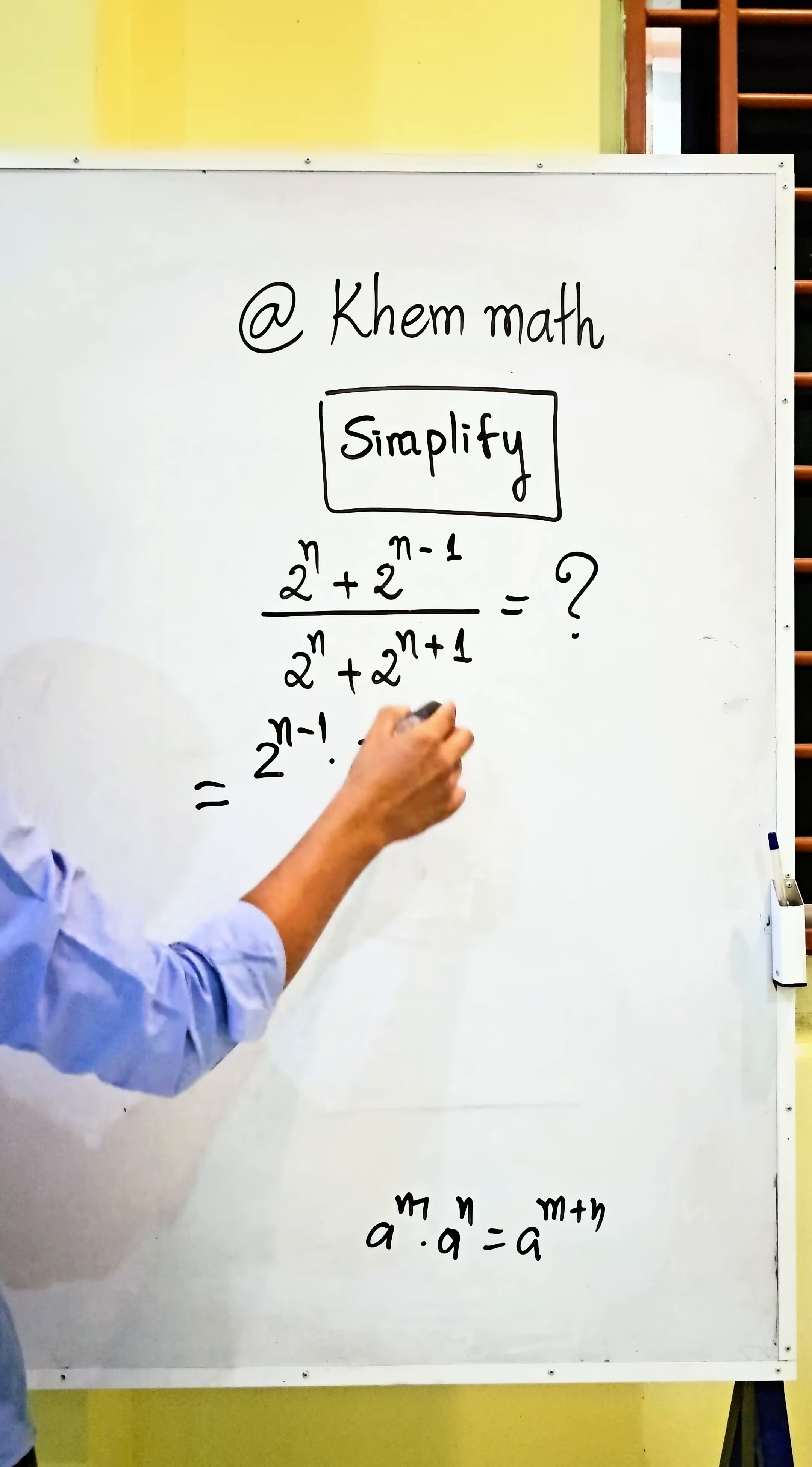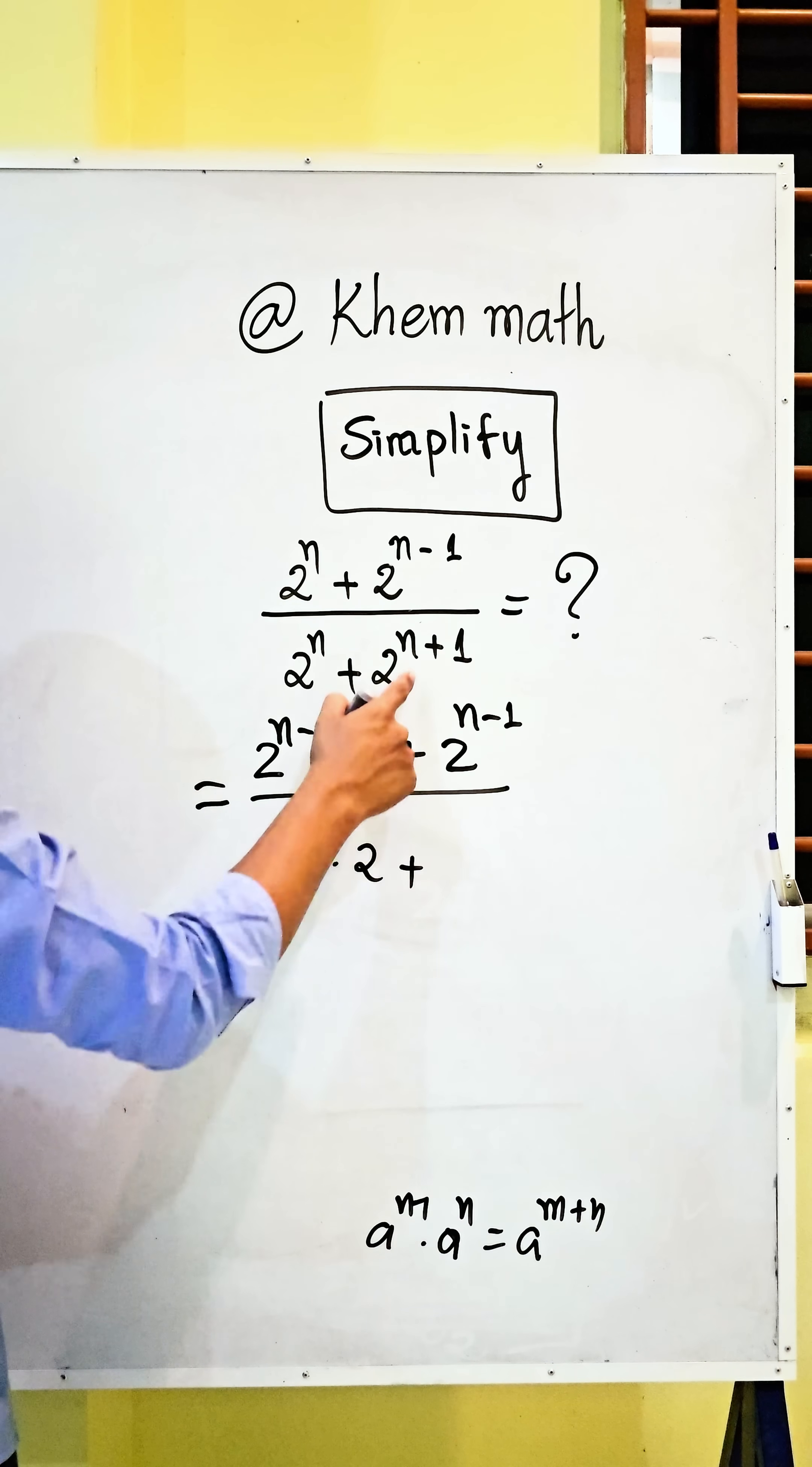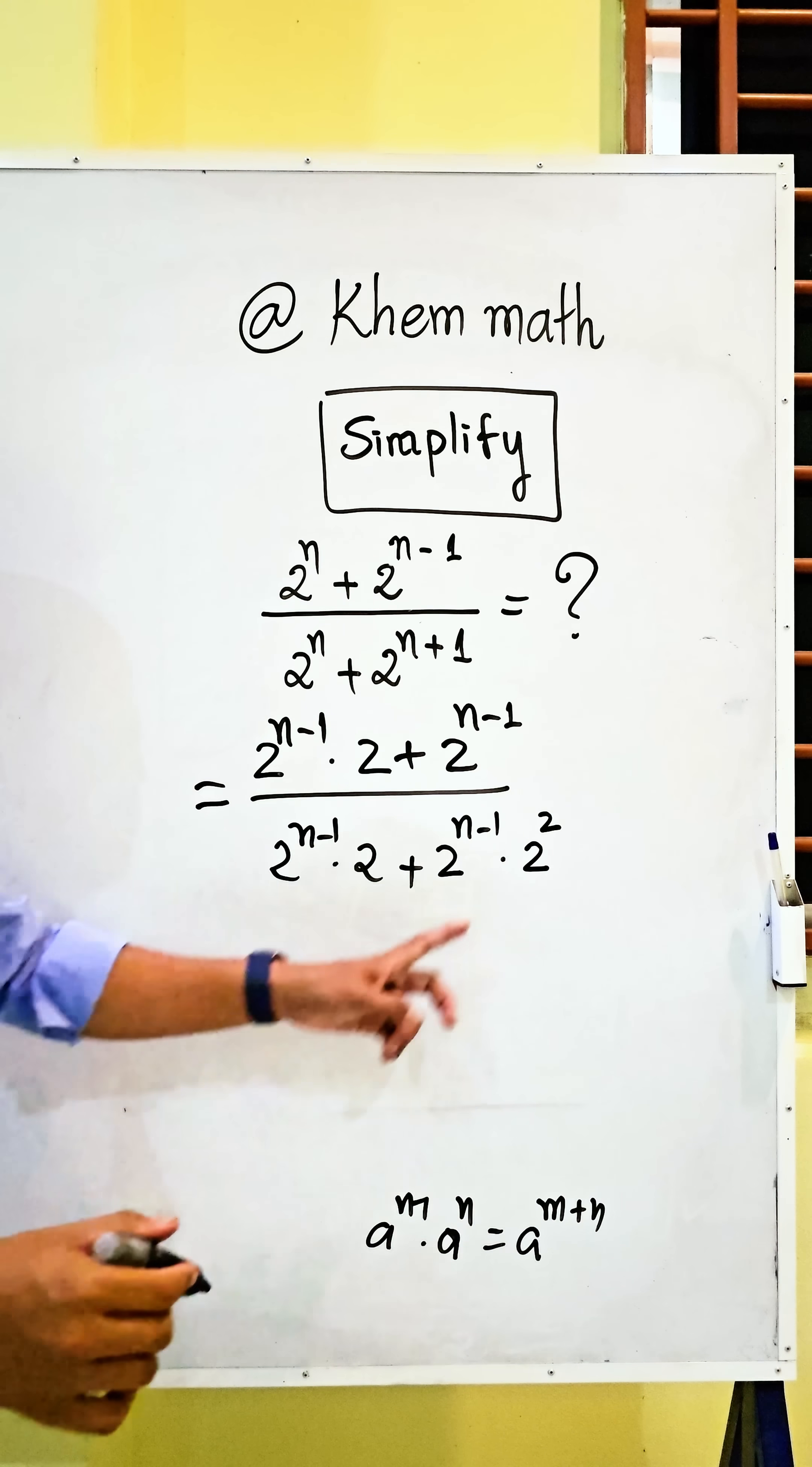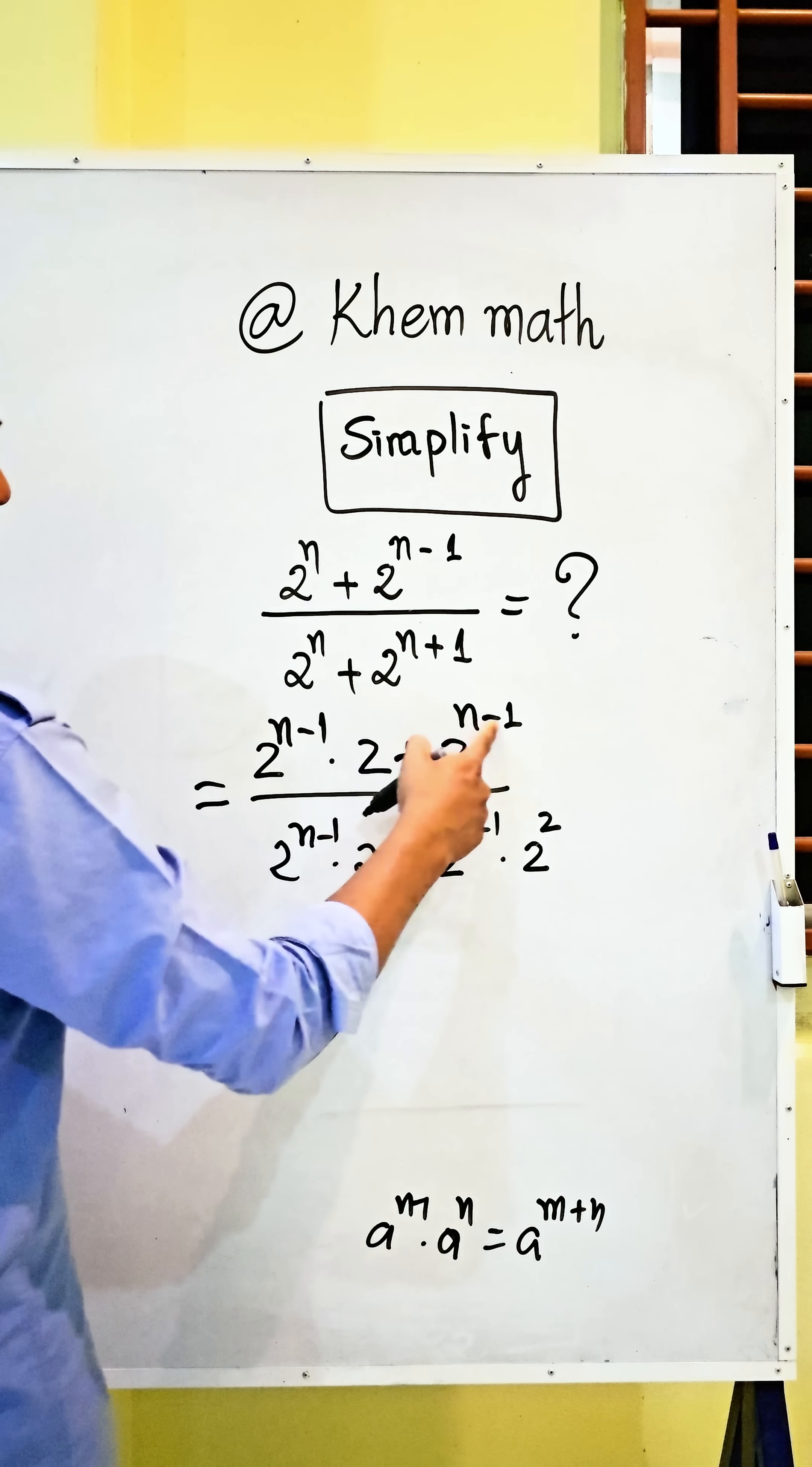Then plus here 2 power n minus 1. And divide, here also write this 2 power n minus 1 times 2. And plus here also we write 2 power n minus 1 times 2 squared. We see this n minus 1 plus 1 equals n. So we see it is 2 power n minus 1 the same.